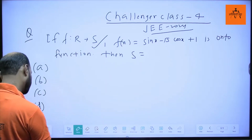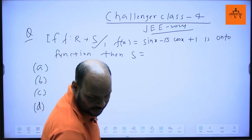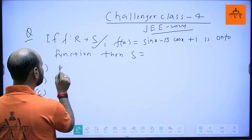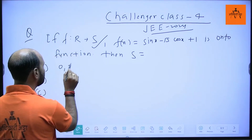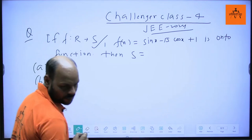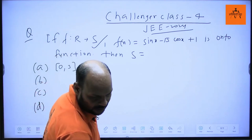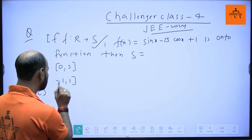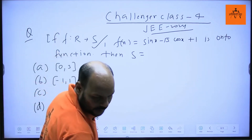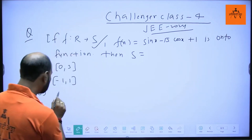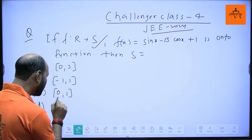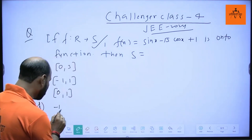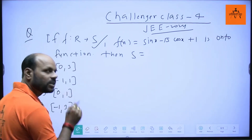The options for S are: 0 to 3, -1 to 1, 0 to 1, and -1 to 3.